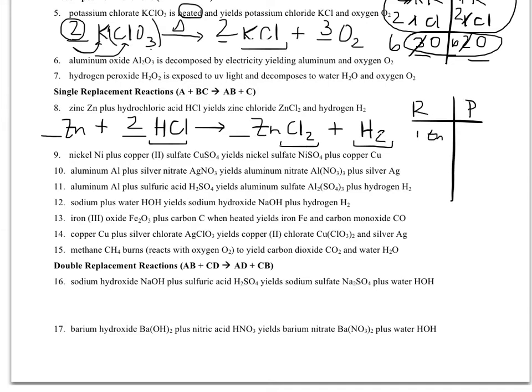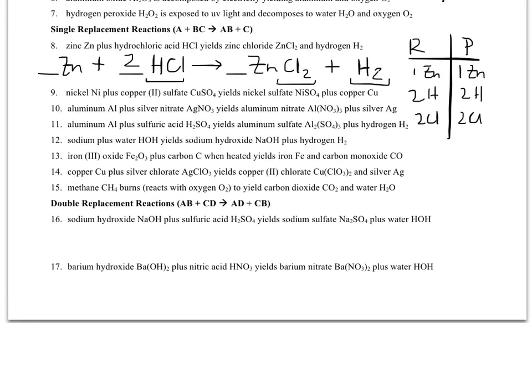I'm going to double check with my reactant product table. Sure enough, I've got one zinc, two hydrogens, and two chlorines. Here I've got one zinc, two chlorines, and two hydrogens. So I should be good. All right. Down to the double replacement reaction.